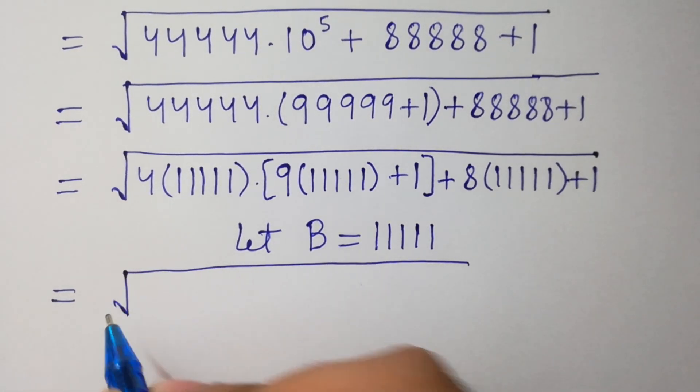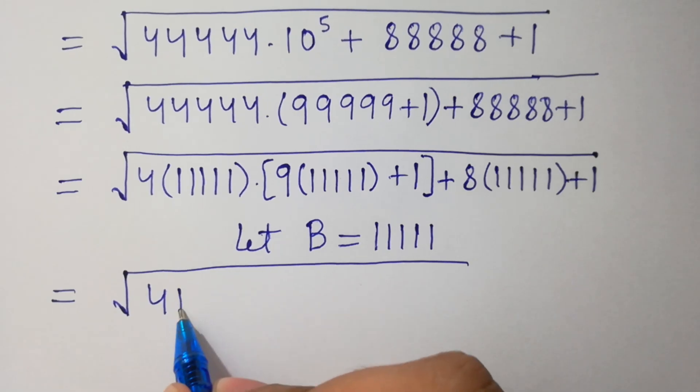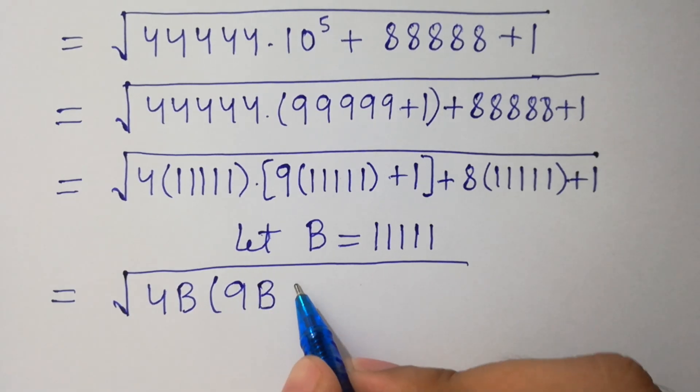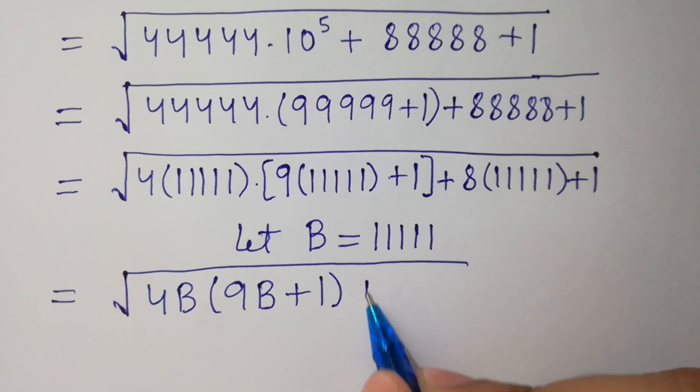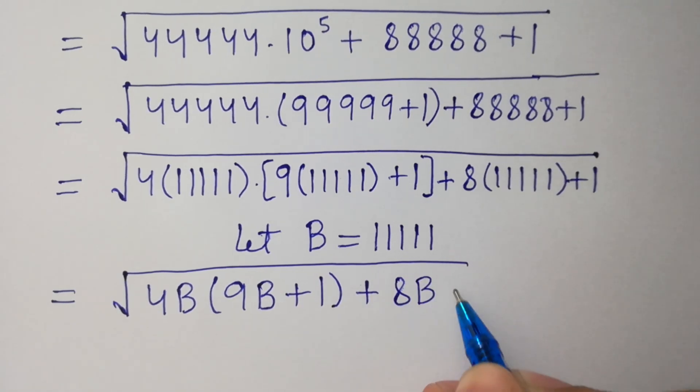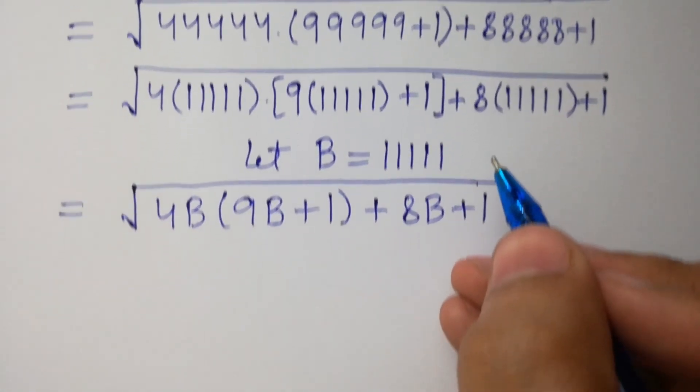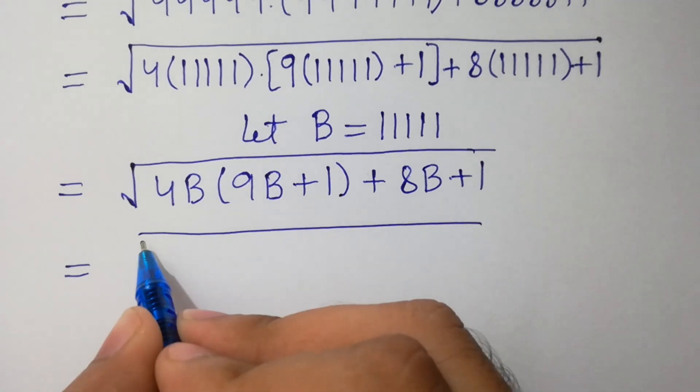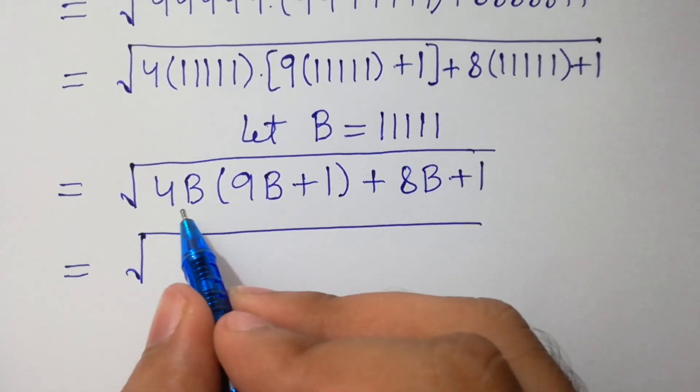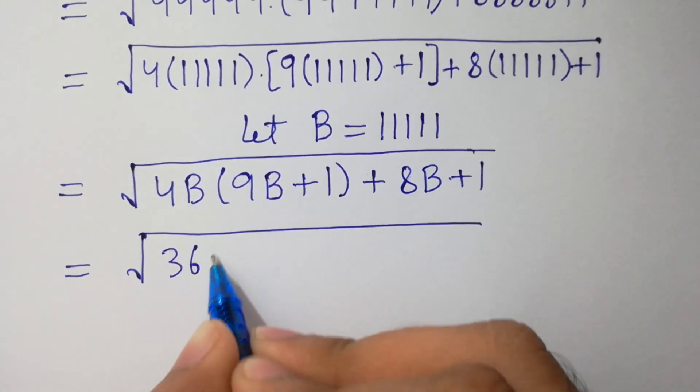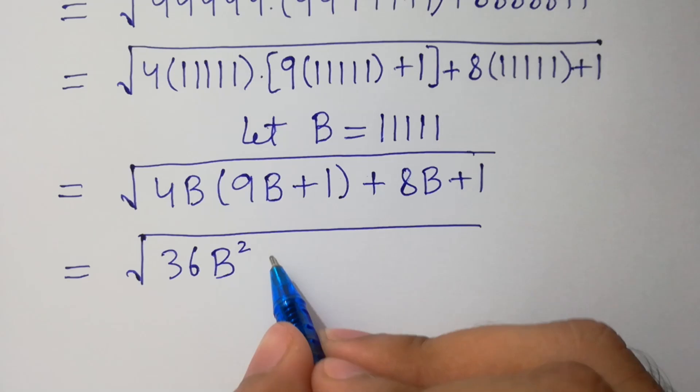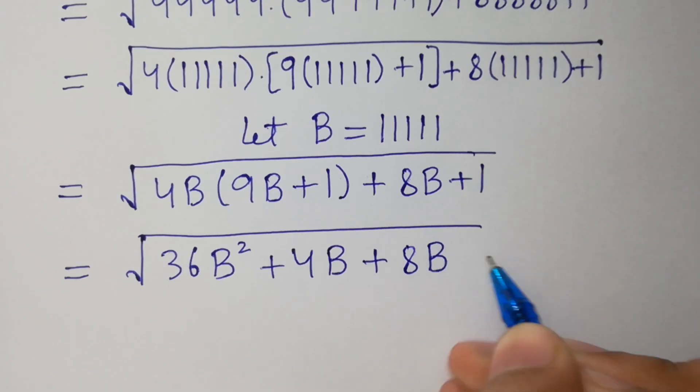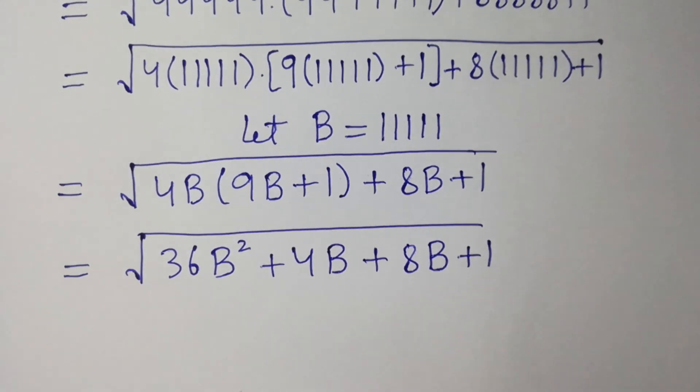Then we have square root of 4B times bracket 9B plus 1, plus 8B plus 1. Very simple. Simplify here.